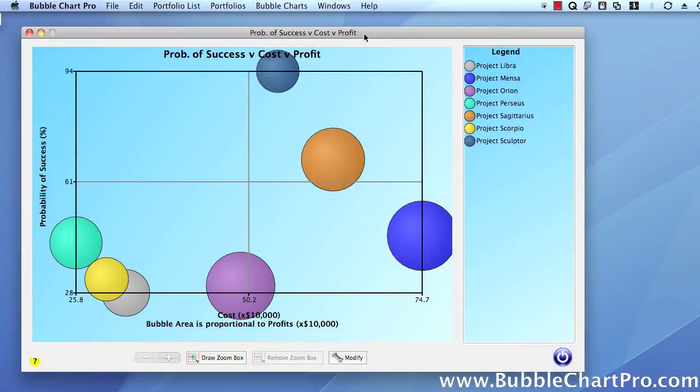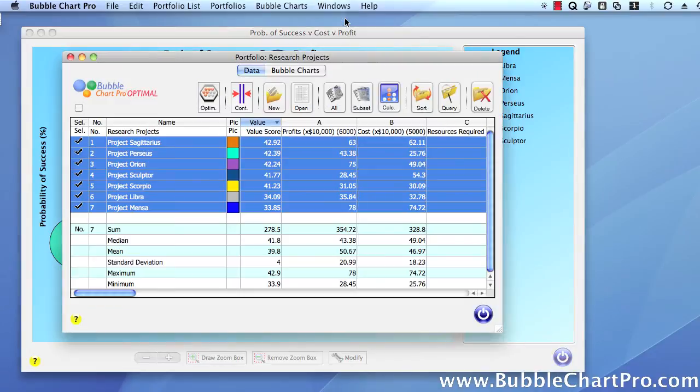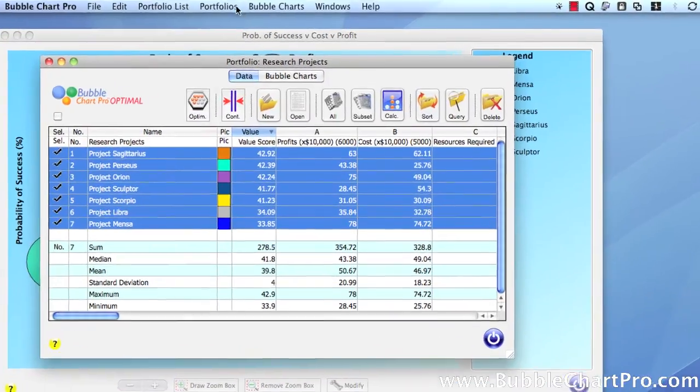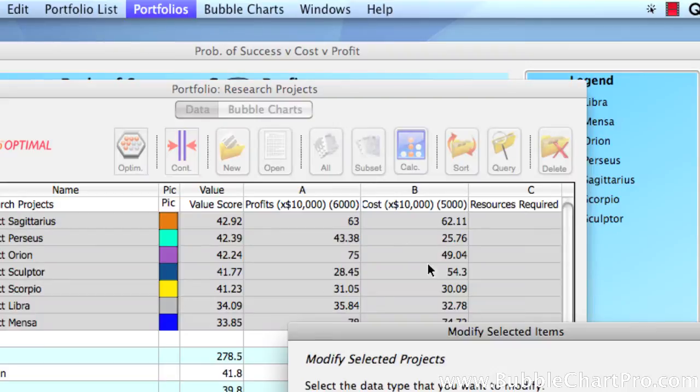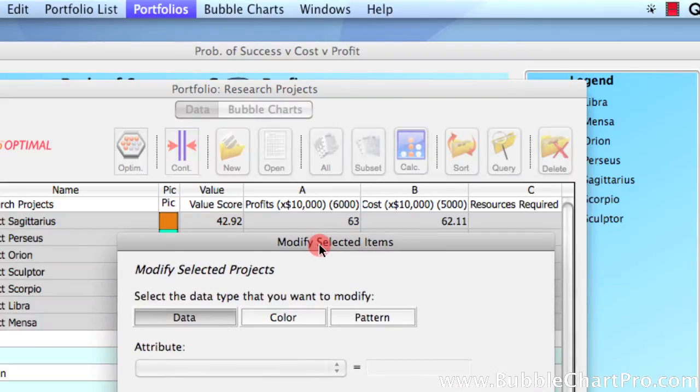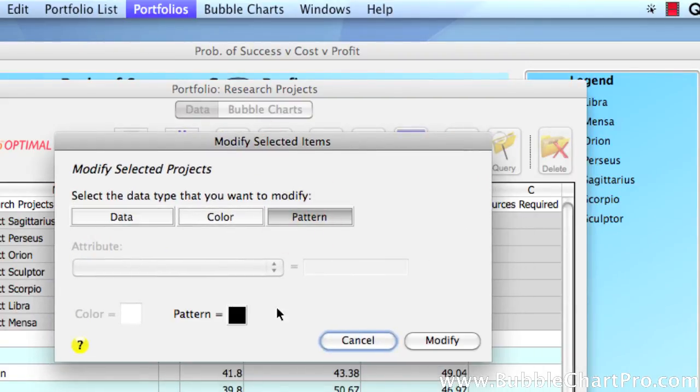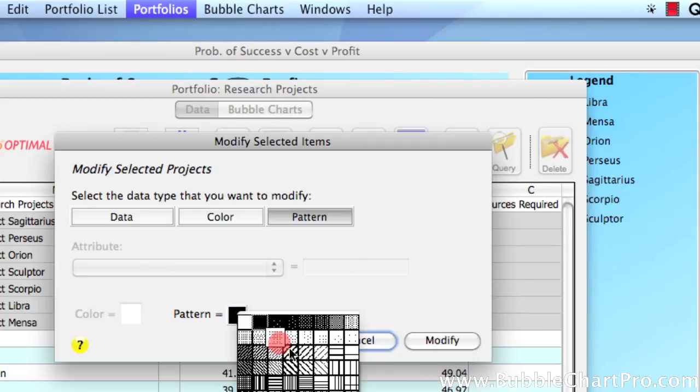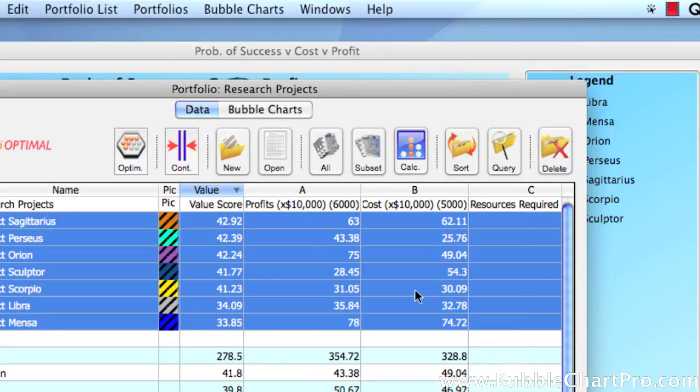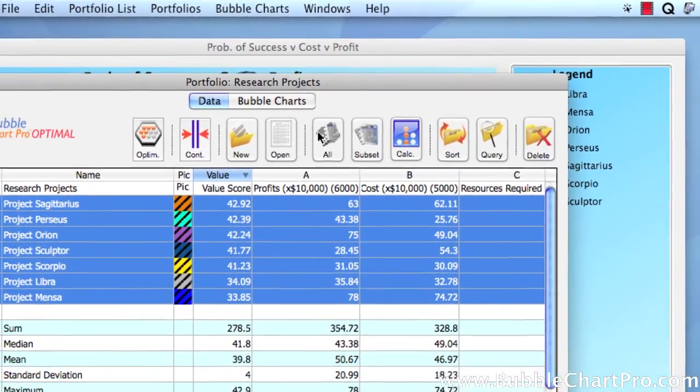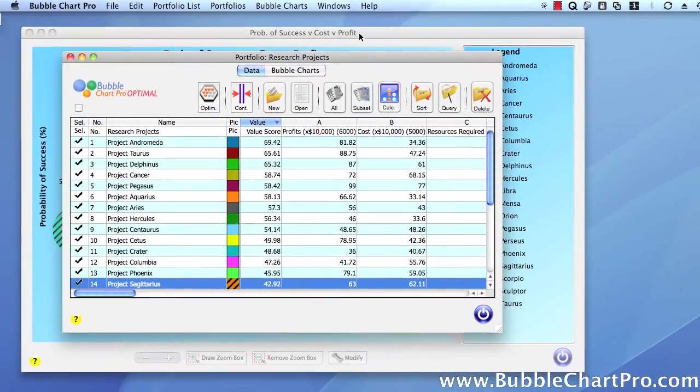Now, let's suppose that you want to be able to distinguish these projects from all the others. Bubble Chart Pro lets you modify subsets of projects in only a few mouse clicks. We go to the Modify Selection menu item to open the Modify Selection form. We're going to change the pattern, so we click on the Pattern button, and then select the pattern that we want to use. Clicking Modify changes the patterns for all the selected projects, so we can instantly distinguish them from all the other projects, as you can see when we click Display All button in the Portfolio form.